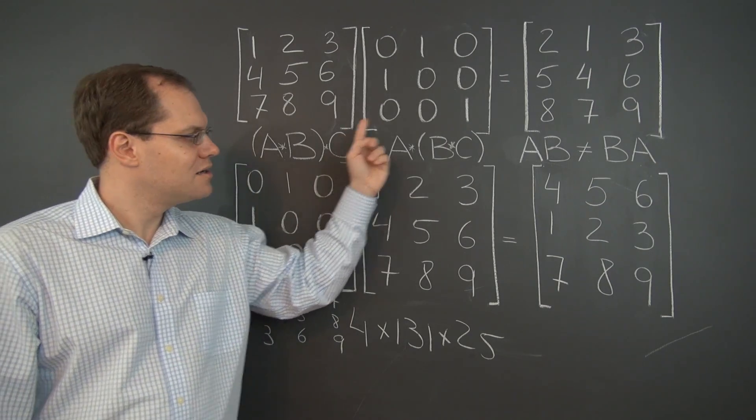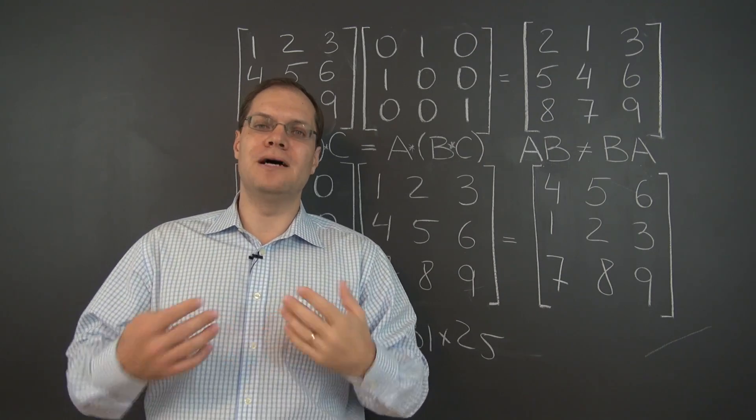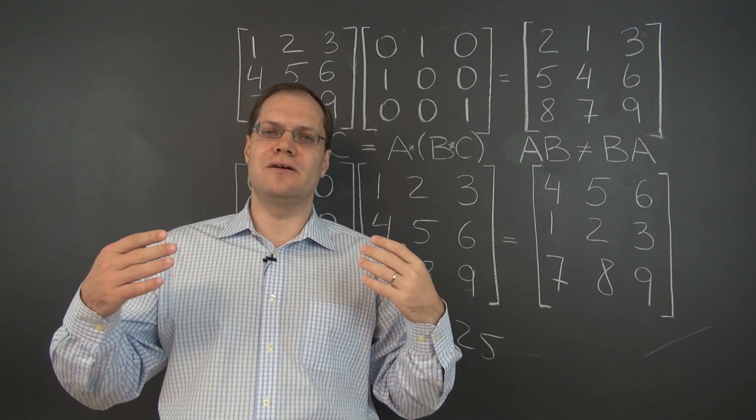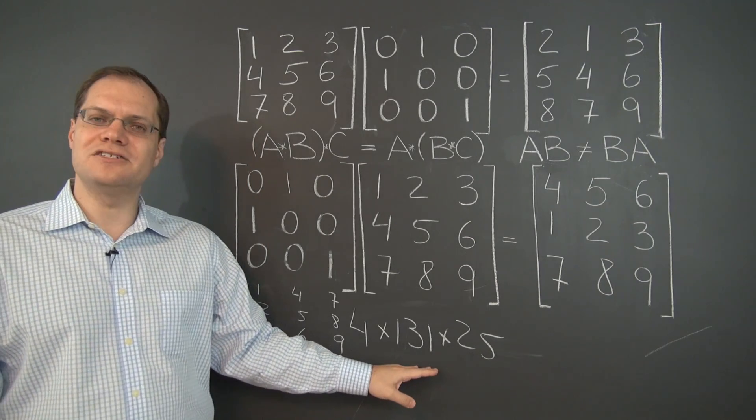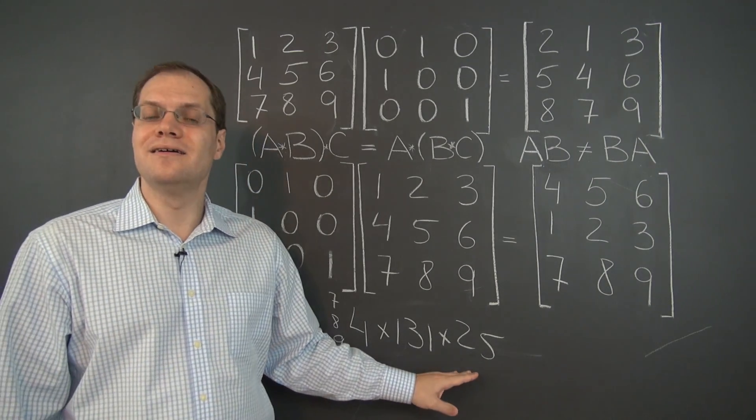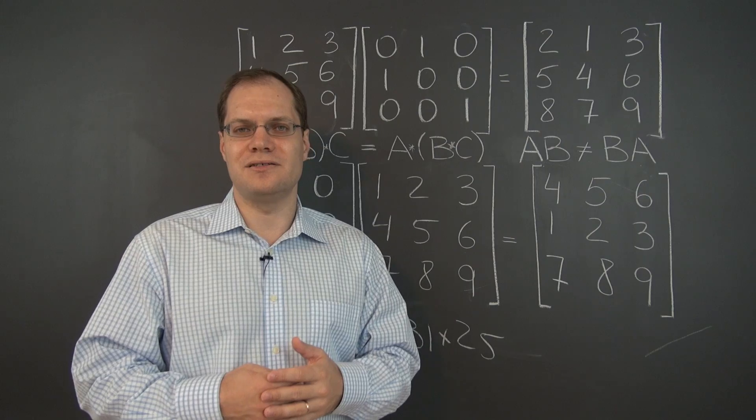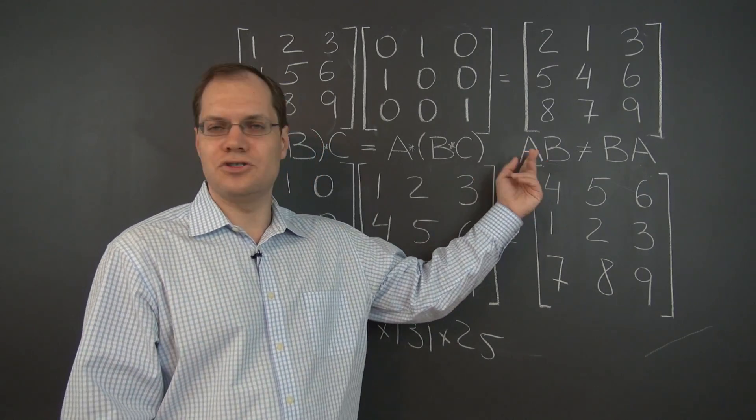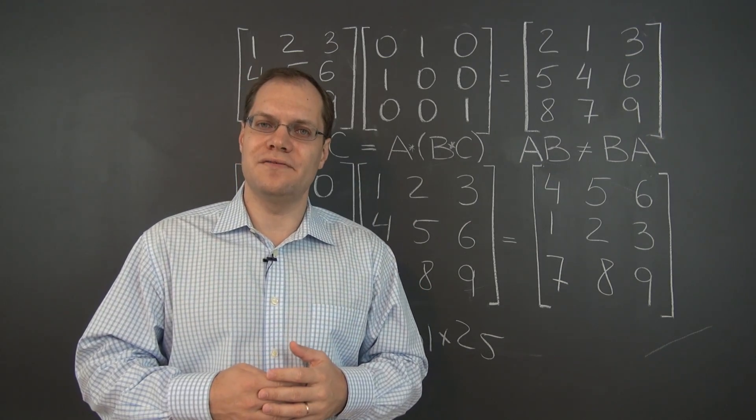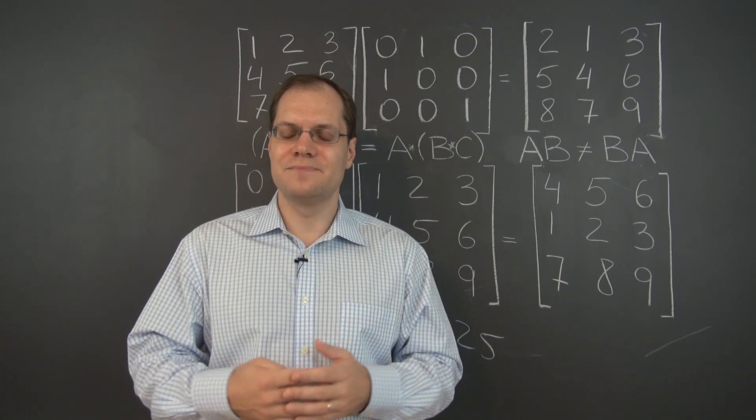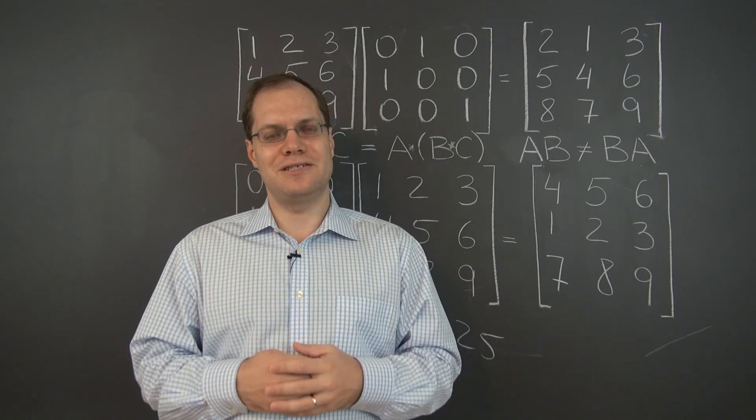While associativity holds, commutativity doesn't hold. Your first emotion may be to be bummed out about this and realize that things are going to be a lot more complicated, that you have to proceed with great caution. When you deal with multiplication of numbers, you switch them around without any concern because that's valid. Now that you're dealing with matrices, you're no longer able to just switch matrices around. But the positive thing is that lack of commutativity is actually more natural than commutativity itself.